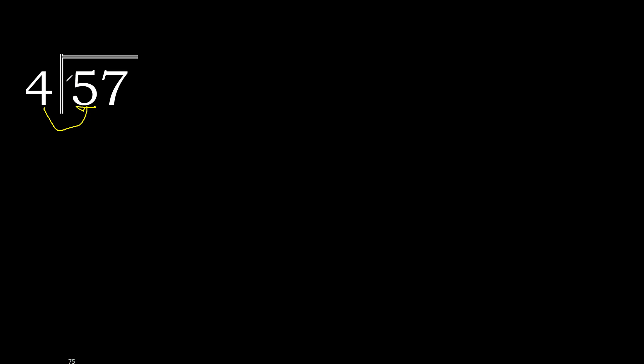57 divided by 4. 5 is not less, therefore 4 — multiply by which number is nearest to 5 but not greater. 4 multiplied by 2 is 8, 8 is greater. 4 multiplied by 1 is 4. 4 is not greater. 5 minus 4 is 1. Next.